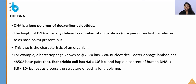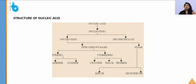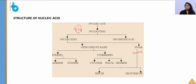DNA is a long polymer of deoxyribonucleotides. The haploid content of human DNA (23 chromosomes) is 3.3 × 10⁹ base pairs, while in E. coli it is 4.6 × 10⁶ base pairs. Nucleic acids are made up of nucleotides; each nucleotide consists of a nitrogenous base, a pentose sugar, and a phosphate group. Nitrogenous bases are classified into purines (adenine and guanine) and pyrimidines (cytosine, uracil, thymine).